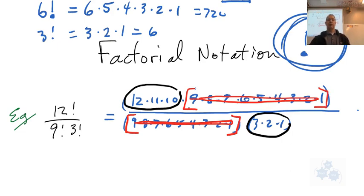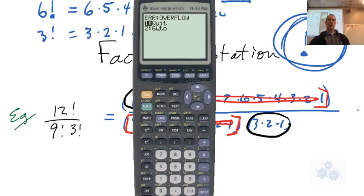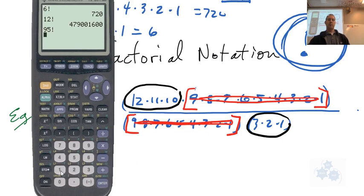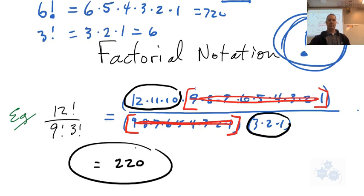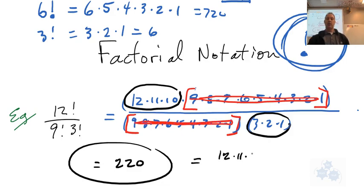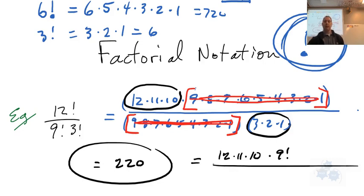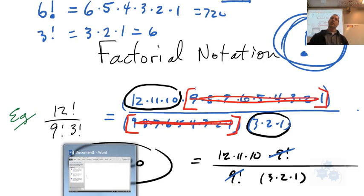Your calculator can surely handle that. So instead of computing huge factorials, you can take a shortcut and write 12! as 12×11×10×9!, and since 9! appears on the bottom, they cancel. You can get smart and recognize these patterns. There's a bit of algebra here but also common sense. The next few examples will be a little tougher, but if you're patient, this should make a lot of sense as well.